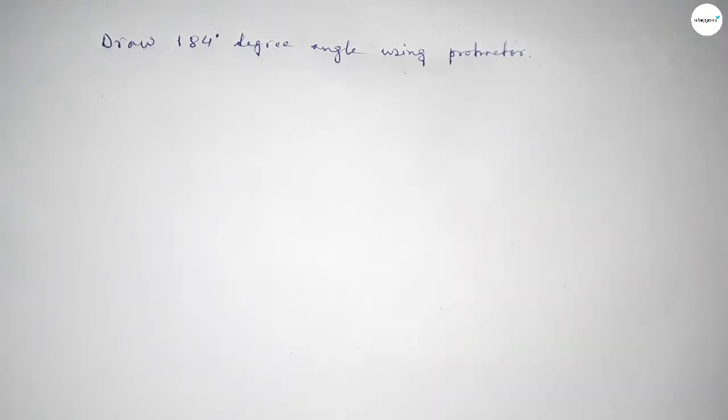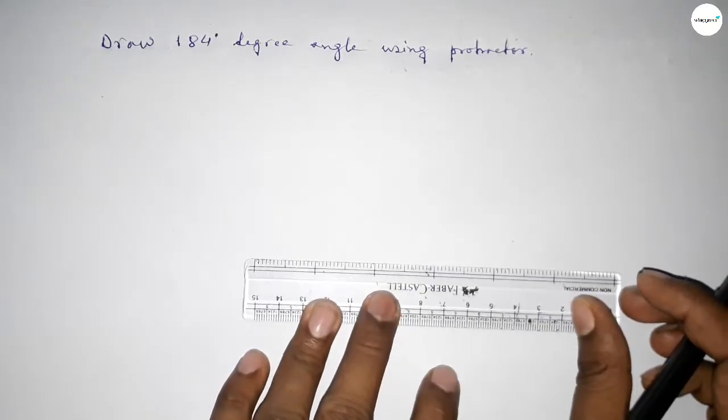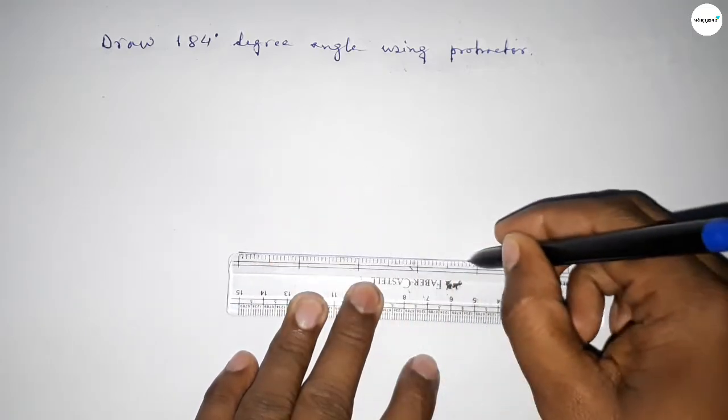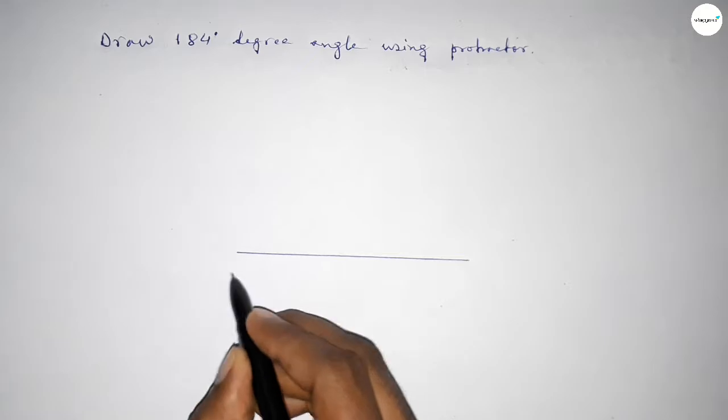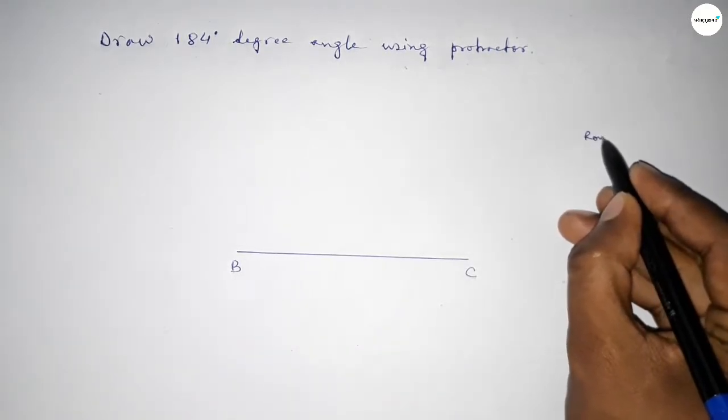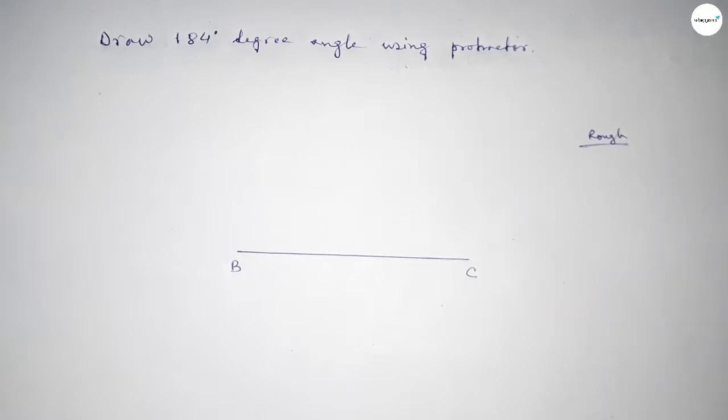Let's start the video. First of all, we have to draw a straight line of any length. Drawing here a line, next taking point B and point C. Now roughly discussing some calculation.